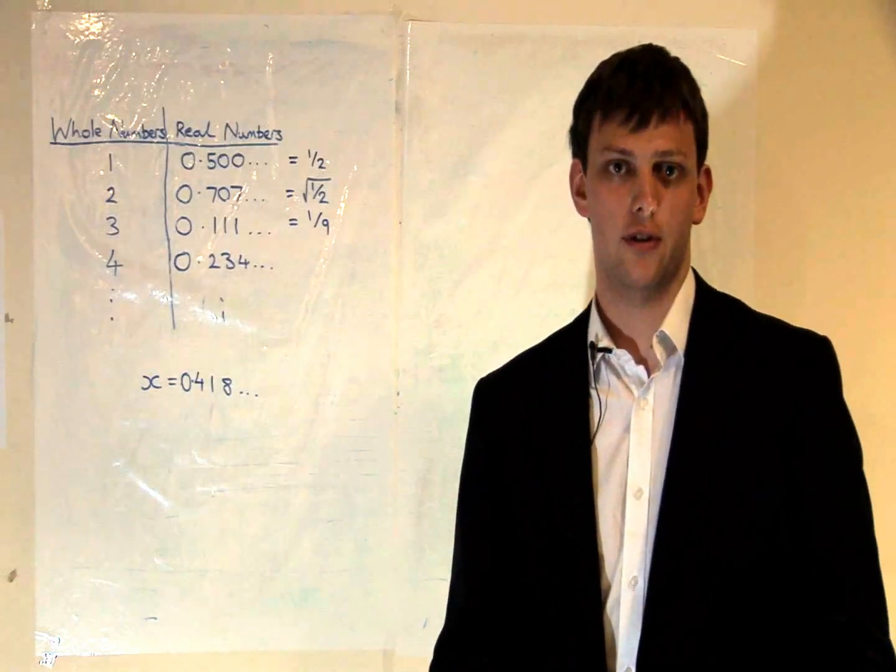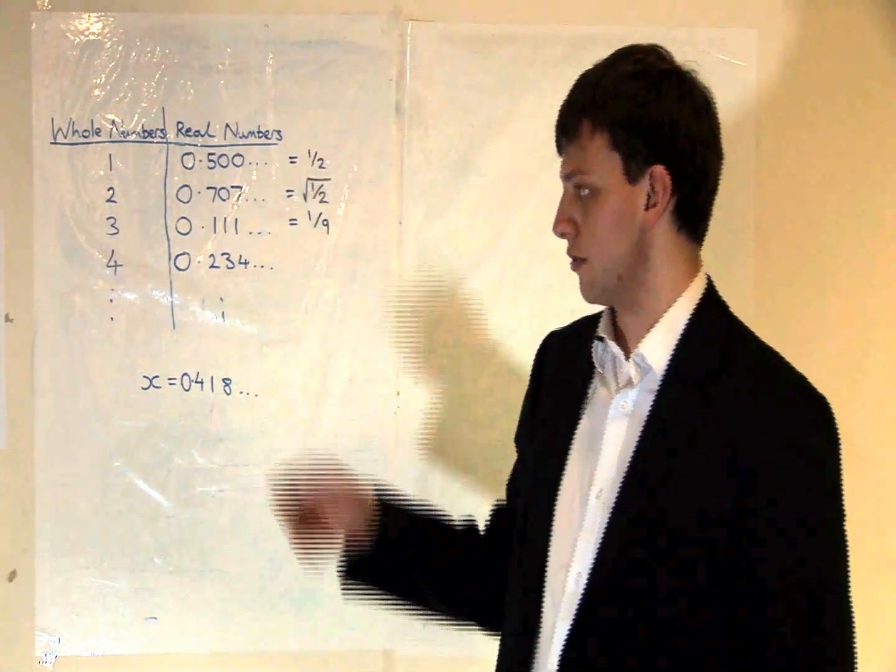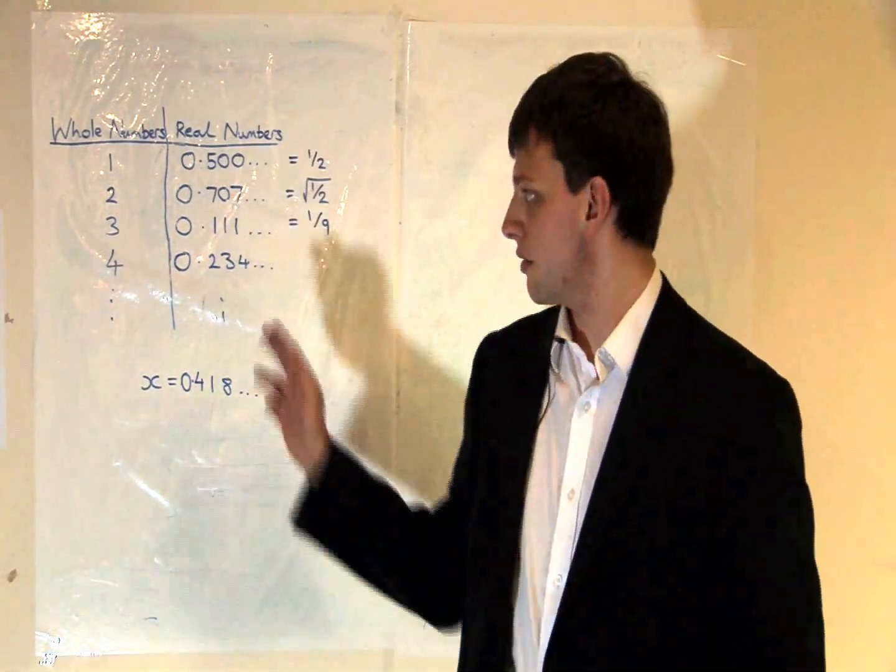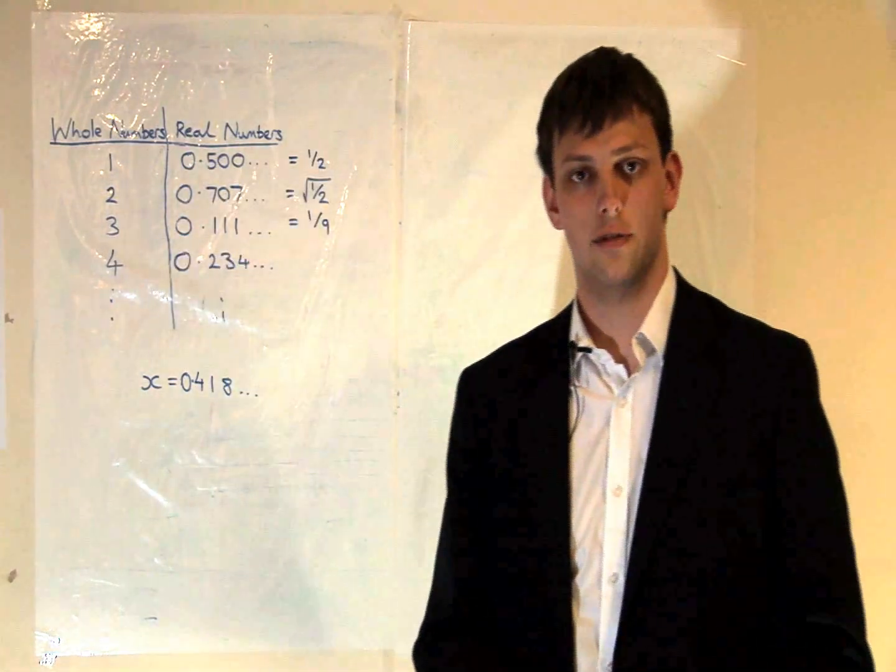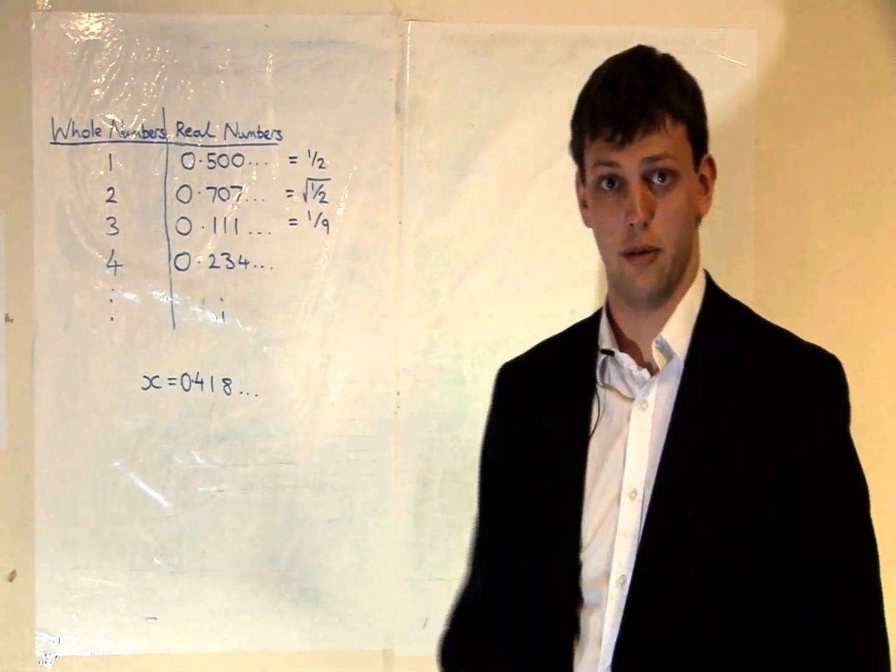Suppose, for the sake of a contradiction, that you can match up all the real numbers with the whole numbers, so that we can write out a list of all the real numbers in the right hand column with the corresponding whole number on the left.